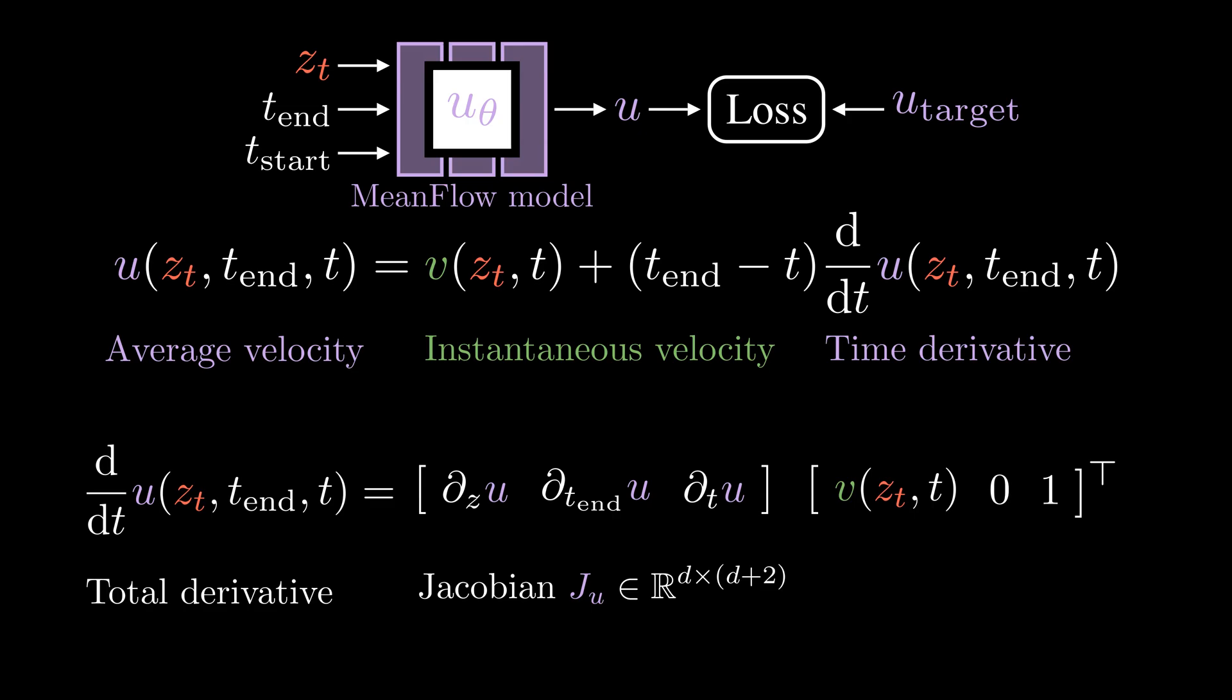Here, the dimension D is the dimensionality of the data. In our toy example, we have two dimensions. But for images or videos, this could have millions of dimensions. The vector has a length of D plus two. Now it seems that computing and storing the full Jacobian matrix is memory intensive.